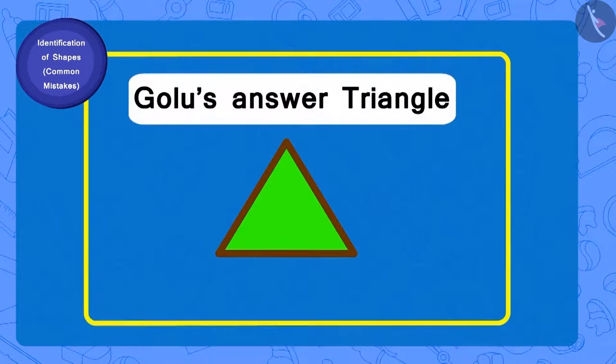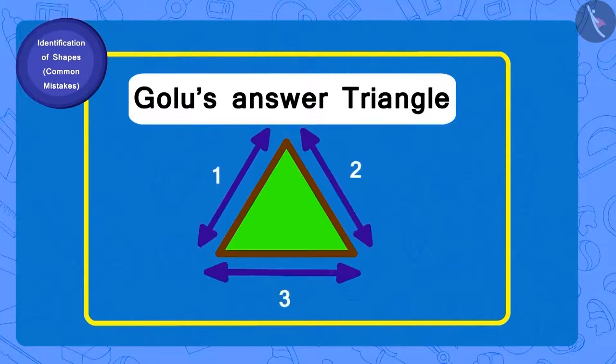Golu has written triangle as the answer. How many sides does a triangle have? Three. And how many corners? Three.